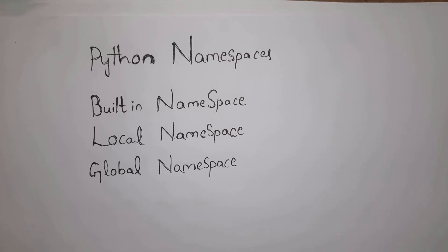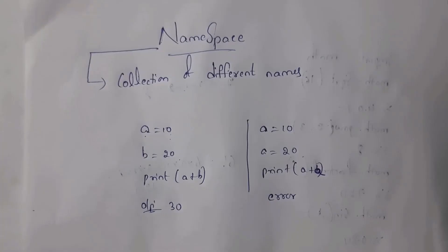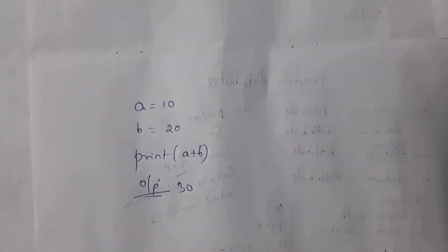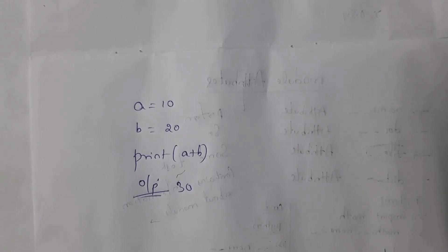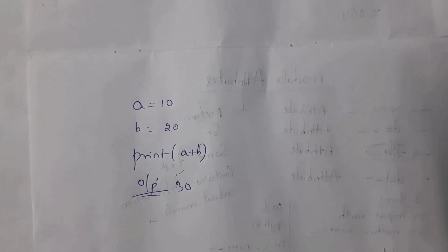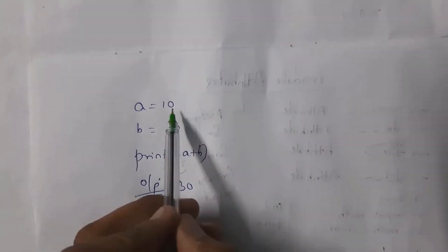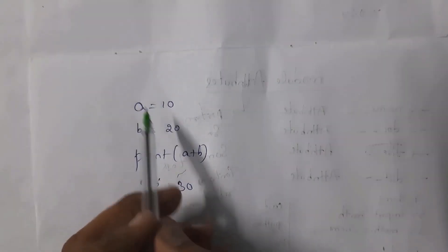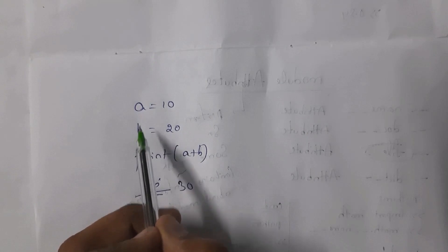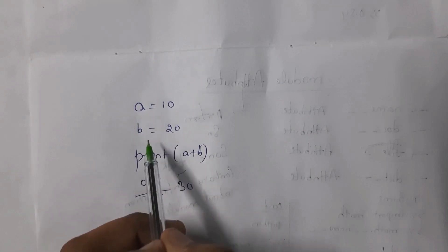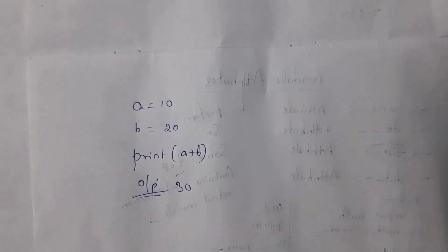Let's get started. A namespace is nothing but a collection of different names, meaning we must give different names to variables or functions within the program. For example, to perform addition between 10 and 20, I store 10 in variable a and 20 in variable b. When I write print(a + b), I get the output 30.